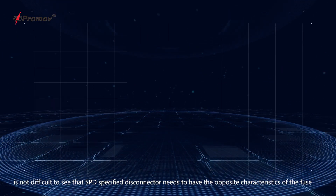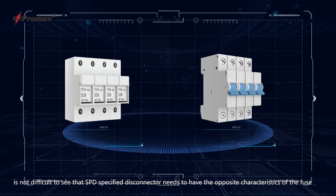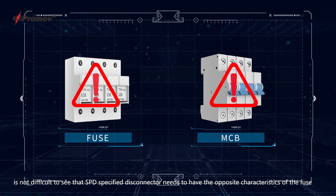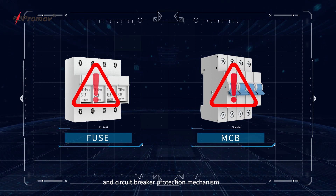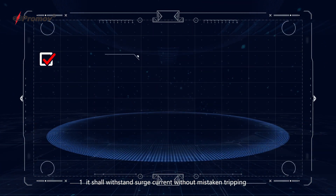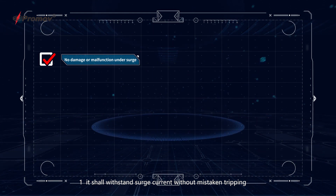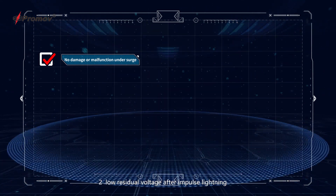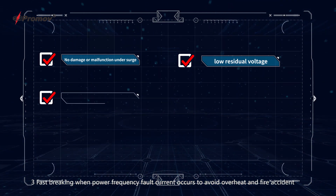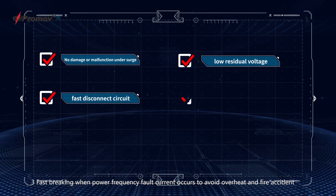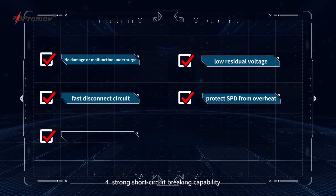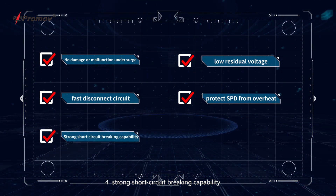It is clear that an SPD-specific disconnector needs to have the opposite characteristics of the fuse and circuit breaker protection mechanisms. It shall have the following functions: 1. It shall withstand surge current without mistaken tripping. 2. Low residual voltage after impulse lightning. 3. Fast braking when power frequency fault current occurs, to avoid overheat and fire accidents. 4. Strong short circuit braking capability.